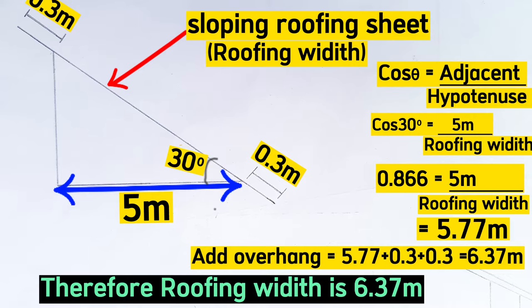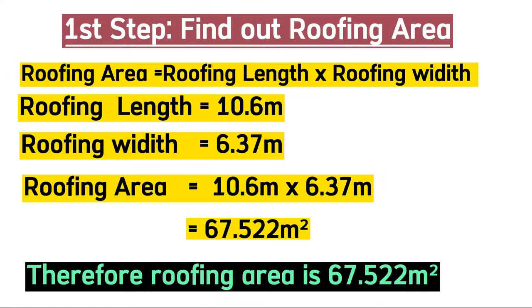We add an overhang of 0.3 m on both sides to get our total roofing width as 6.37 m. So we now have roofing length = 10.6 m and roofing width = 6.37 m. Therefore roofing area = 10.6 × 6.37 = 67.522 m².